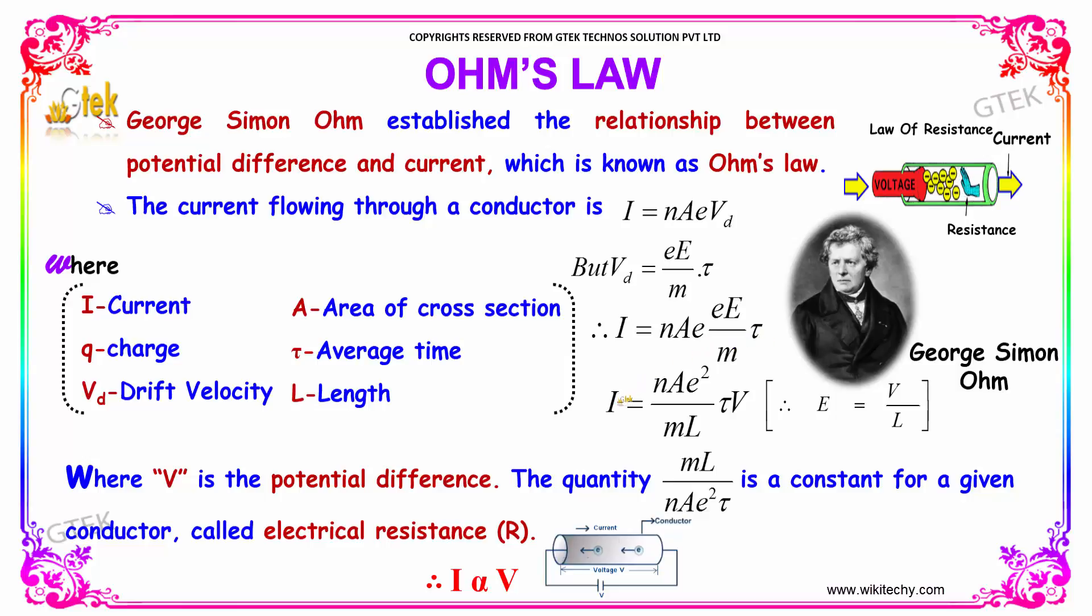We will be getting the equation as I is equal to NaE square divided by m into L into tau into V, so that the capital E is equal to V by R. Where V is the potential difference and the quantity m into L divided by NaE square tau is a constant for a given conductor called electrical resistance.